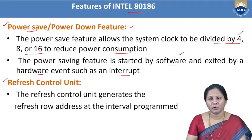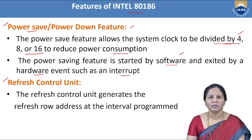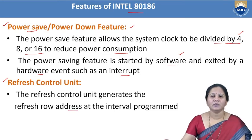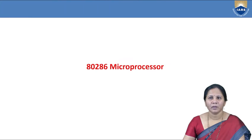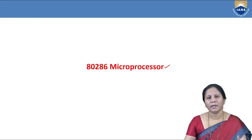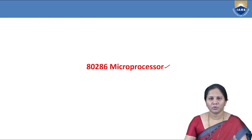The 80186 also consists of a refresh control unit, which generates the refresh row address during programming. Those are some of the important features of the 80186 microprocessor. The 80286 microprocessor is the enhanced version of the 80186, meaning its features are somewhat more advanced compared to the 80186.